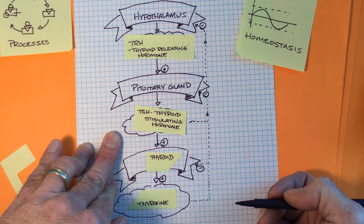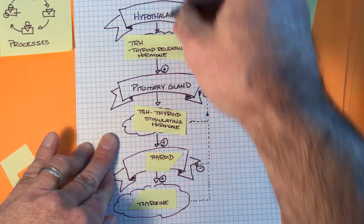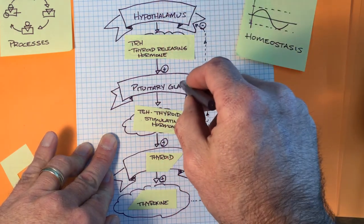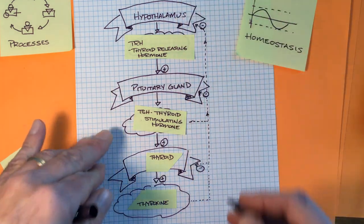Super cool, isn't it? And thyroxin basically inhibits both pituitary and hypothalamus. TSH would inhibit the pituitary and the hypothalamus as well.